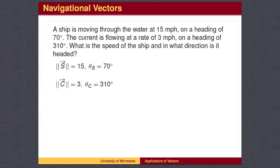To set up the problem, the polar form of the ship's vector has a length of 15 miles per hour and a direction of 70 degrees. The current's vector has a length of 3 miles per hour and a direction of 310 degrees.